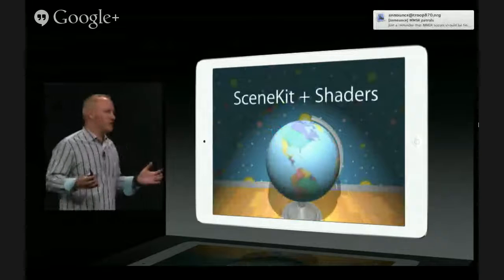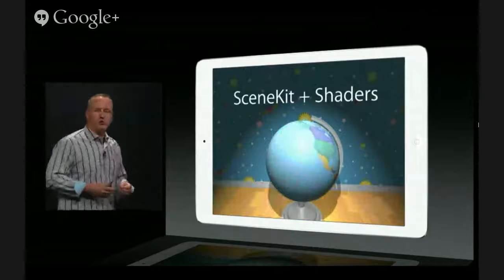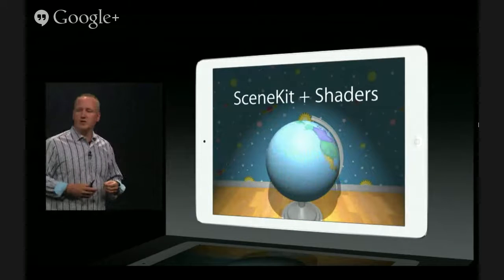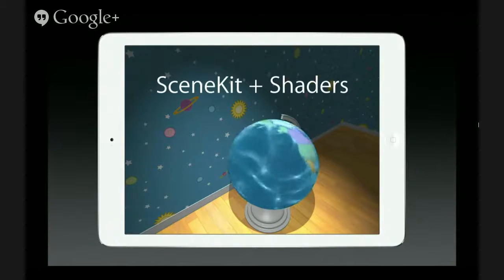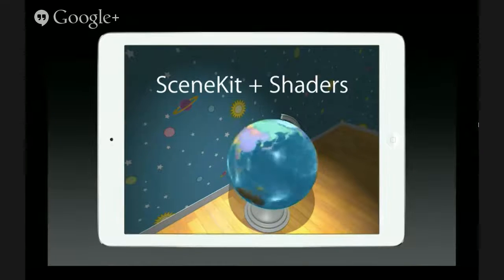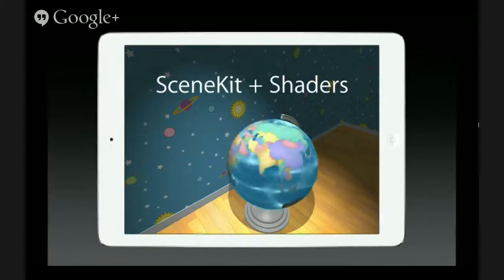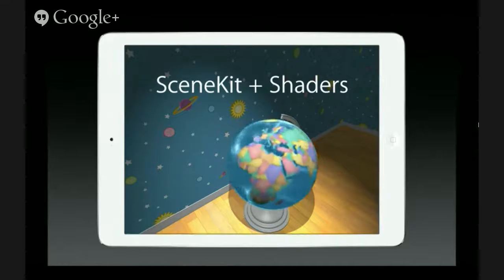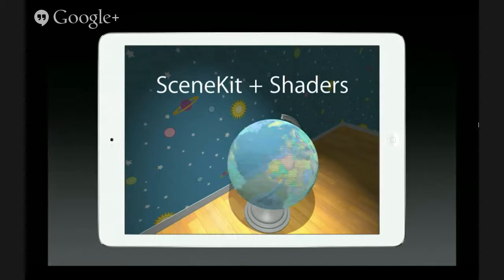And finally, of course, you have shaders. We have vertex, surface, and fragment shaders. Here you have a simple vertex shader which is manipulating the model's geometry in real time. We have surface shaders where you can affect the surface and lighting properties of our model, here creating this cool caustic effect. And finally, fragment shaders which can create amazing pixel-level effects like this glass globe effect here. So that's SceneKit plus shaders.